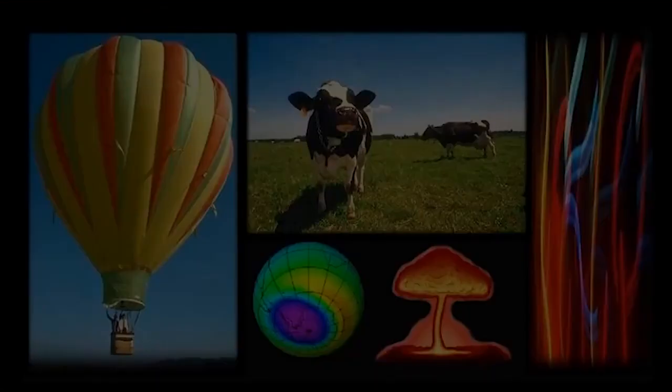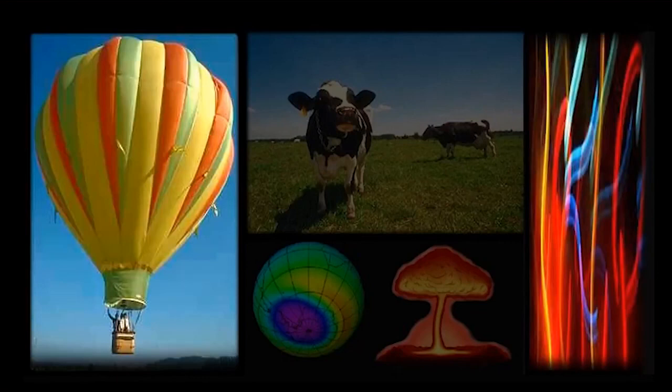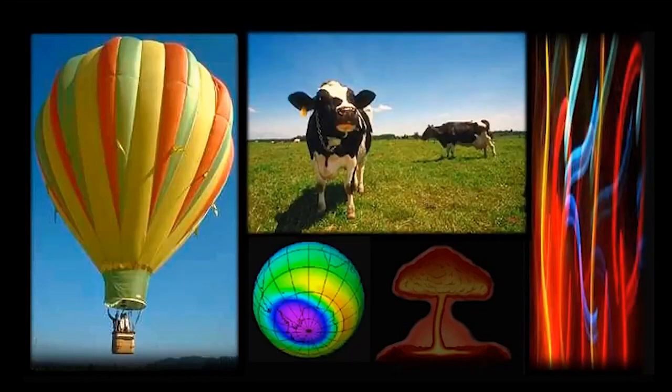There are many more gases that are found in such small quantities that we regard them as trace gases. Some of these include neon, helium, methane, ozone and hydrogen.